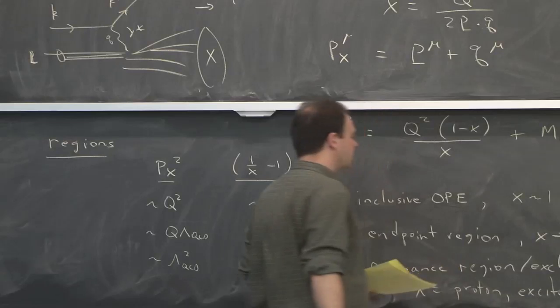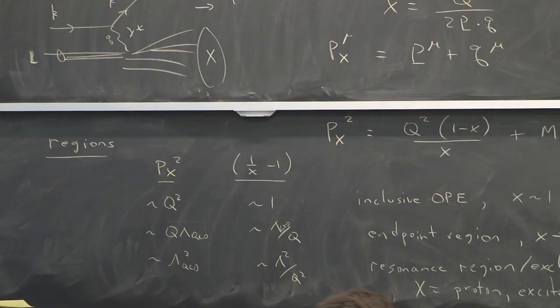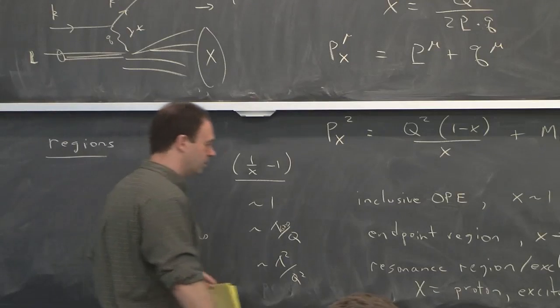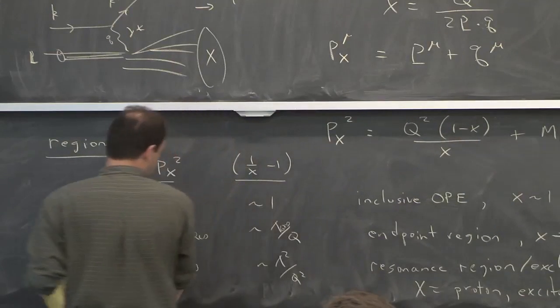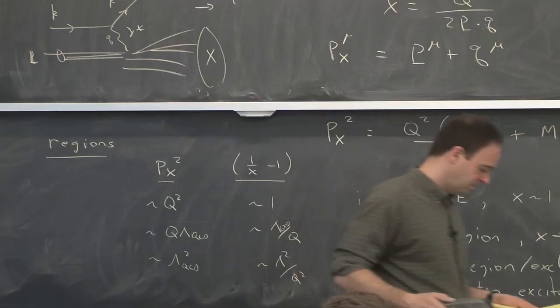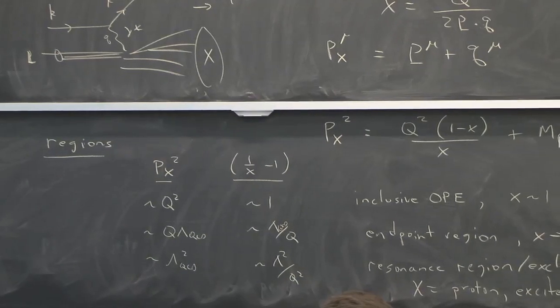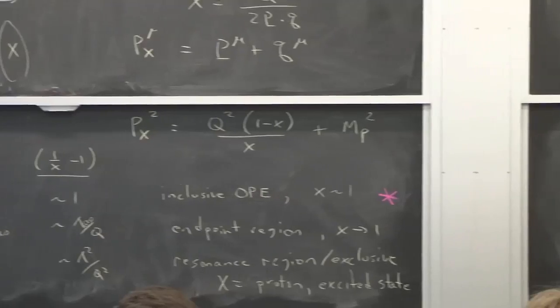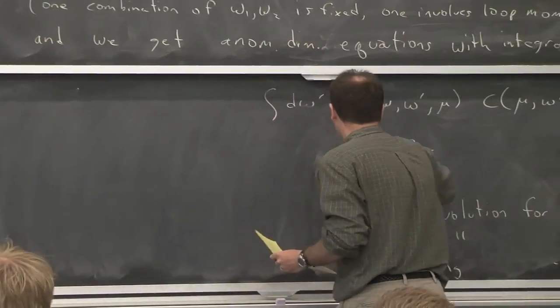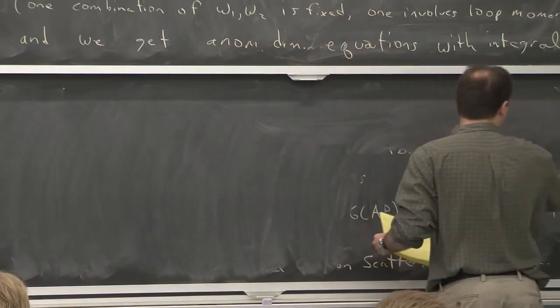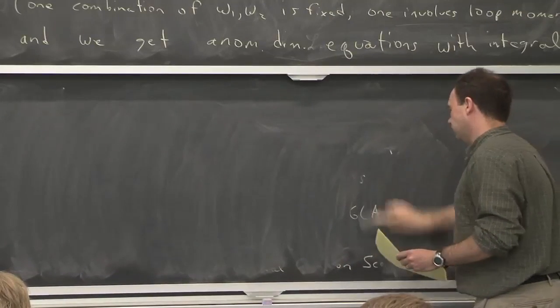So actually, all three of these cases can be done with SCT. And the way that it works is different in each case. And the case that we'll do is just the first one, which is kind of a classic one, and also the simplest one. So our P_x squared is going to be of order Q squared for our analysis.